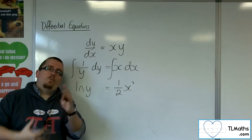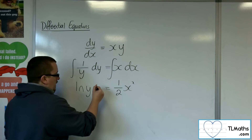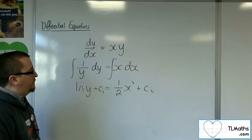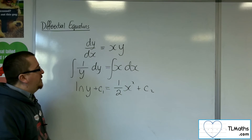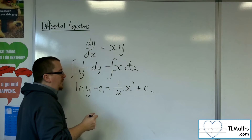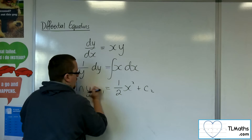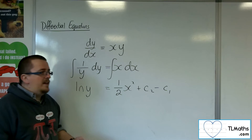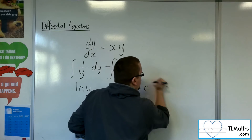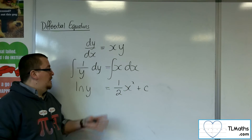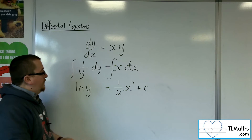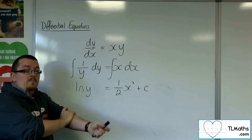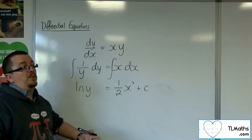Now you might be thinking, what about a constant of integration? Surely I would get a constant of integration on each side — I'll call them c1 and c2. However, if I add a constant of integration to both sides, these numbers aren't necessarily the same. I could subtract c1 from both sides, and c2 minus c1 is just a constant — just a number. So there's no reason why I can't just put the constant of integration on the right-hand side. Traditionally we keep it on the right-hand side, because our usual aim is to get y equals, which saves us an extra bit of rearranging.